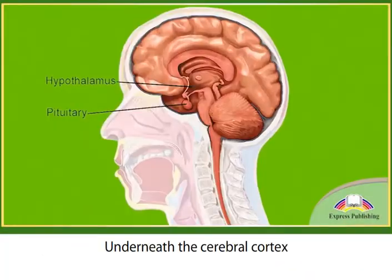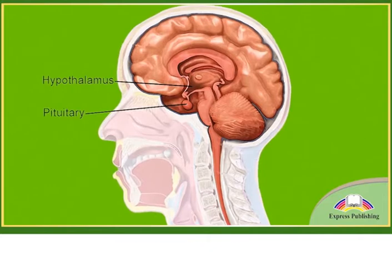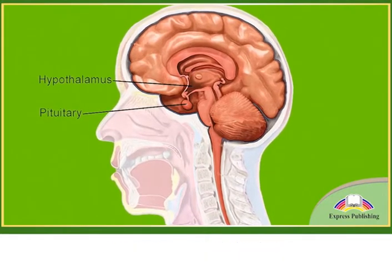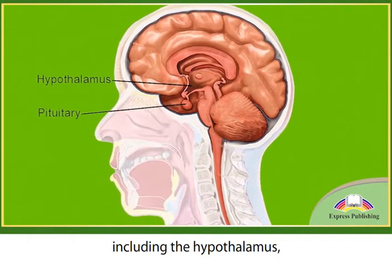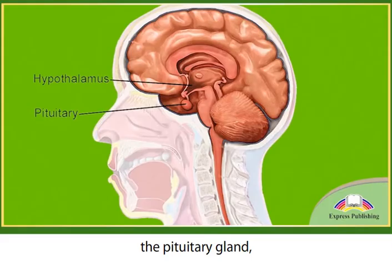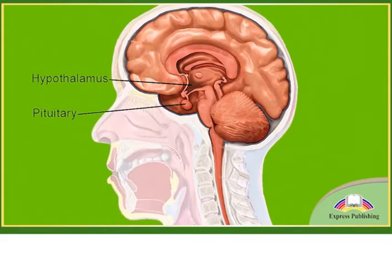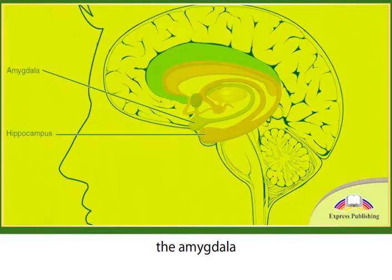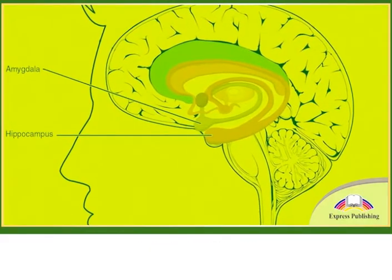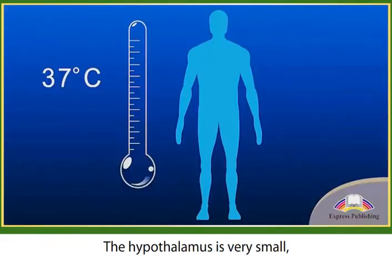Underneath the cerebral cortex are several important structures, including the hypothalamus, the pituitary gland, the amygdala and the hippocampus. The hypothalamus is very small,